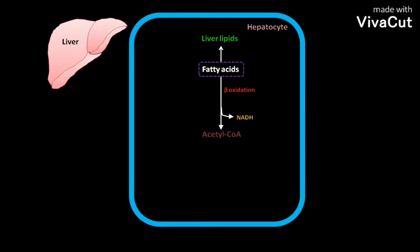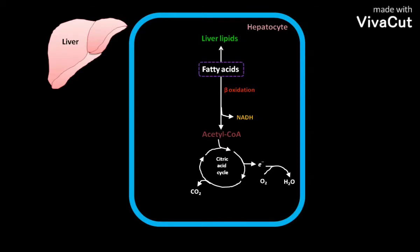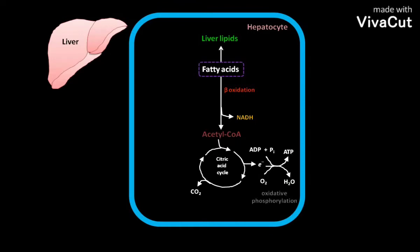The acetyl-coenzyme A is further oxidized via the citric acid cycle. Electrons released from the citric acid cycle go through an electron transport chain and are finally accepted by oxygen molecules to produce water. This electron transport chain is coupled to a reaction in which ADP and Pi combine to form ATP. The whole process — from electron transfer through the citric acid cycle substrates to ATP formation — is called oxidative phosphorylation.